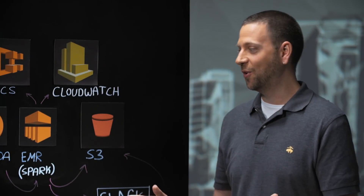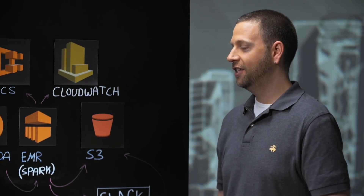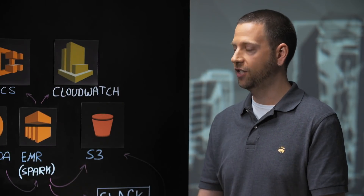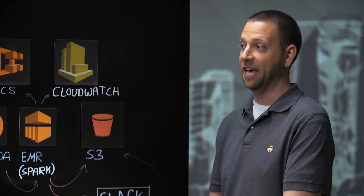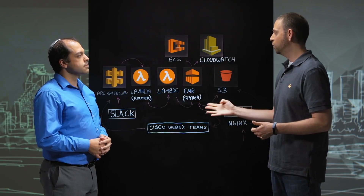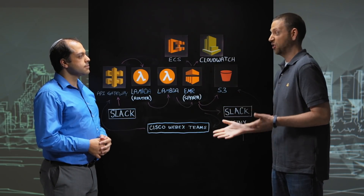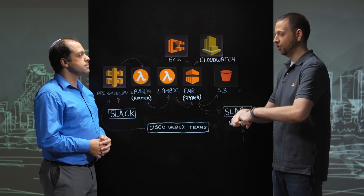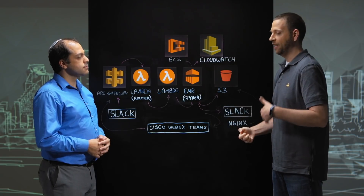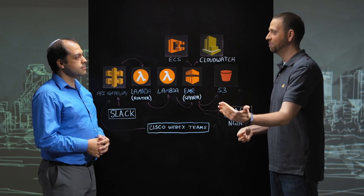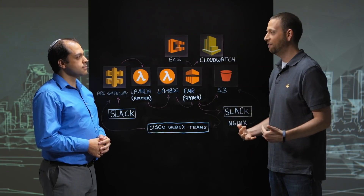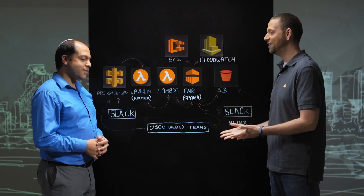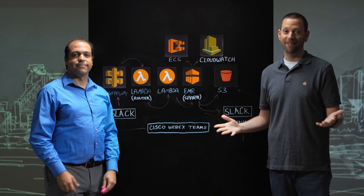I really liked this story. We hear a lot from customers that they have certain audiences they don't want directly interfacing with the CLI or the AWS console. With tools like this, whether it was spinning up an EMR cluster via Slack or Cisco Webex Teams or something else, you can easily tie that in and give users a way to request AWS resources, be notified when it's done, and leverage AWS — without direct console access. Thank you for walking us through this, and thank you for watching This is My Architecture.